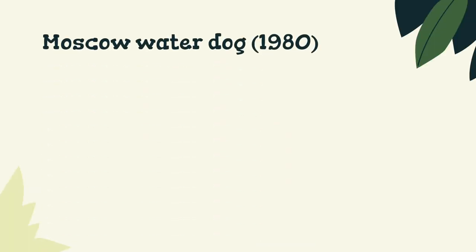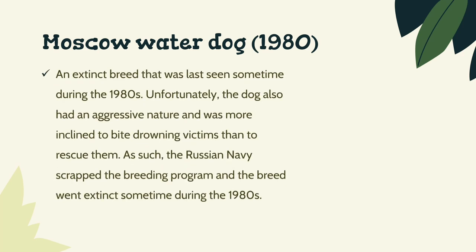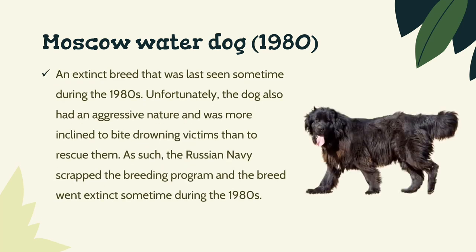Moscow Water Dog, in 1980. It is an extinct breed that was last seen sometime during the 1980s. The dog had an aggressive nature and was more inclined to bite drowning victims than to rescue them. As such, the Russian Navy scrapped the breeding program and the breed went extinct sometime during the 1980s.